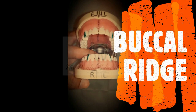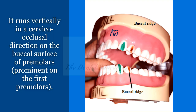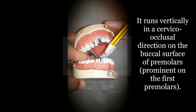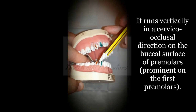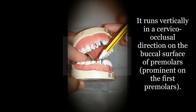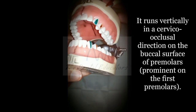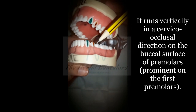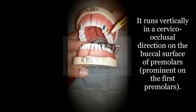The buccal ridge is similar to the labial ridge but runs vertically in the cervical-occlusal direction on the buccal surface of the premolar, since it is on the posterior teeth. It is mainly prominent in the premolar. In the video demonstration, the brown marked area represents the buccal ridge, while the green marked area represents the labial ridge on the canines.